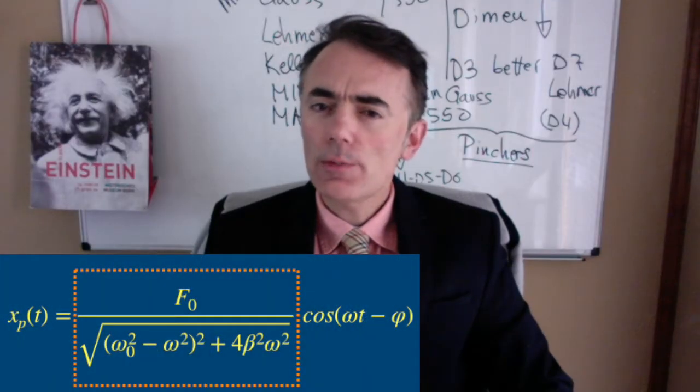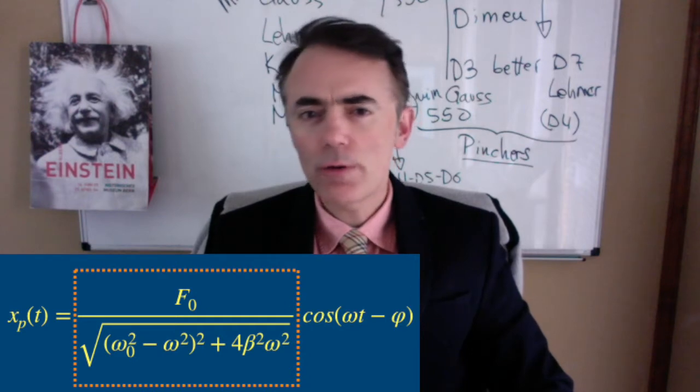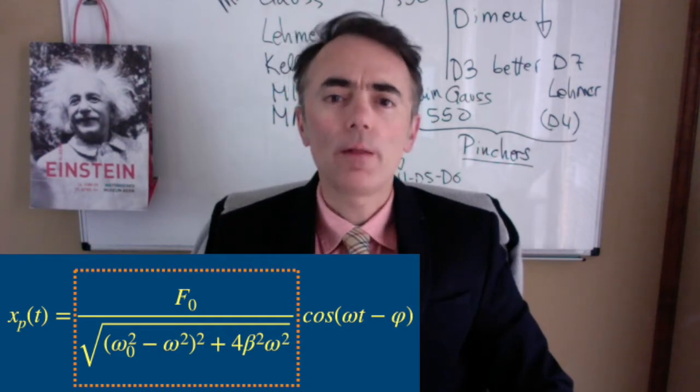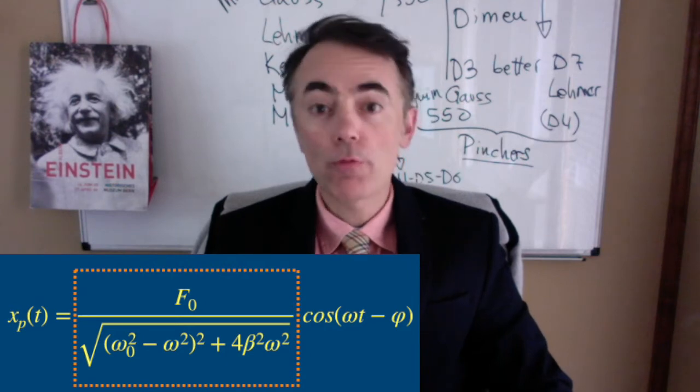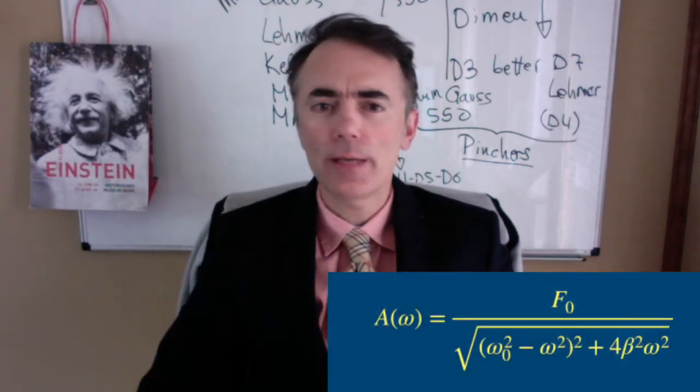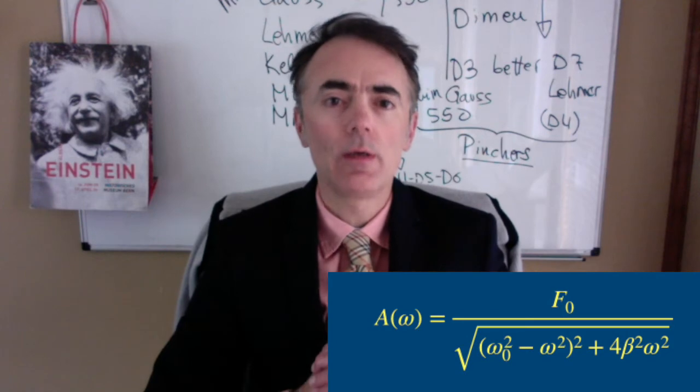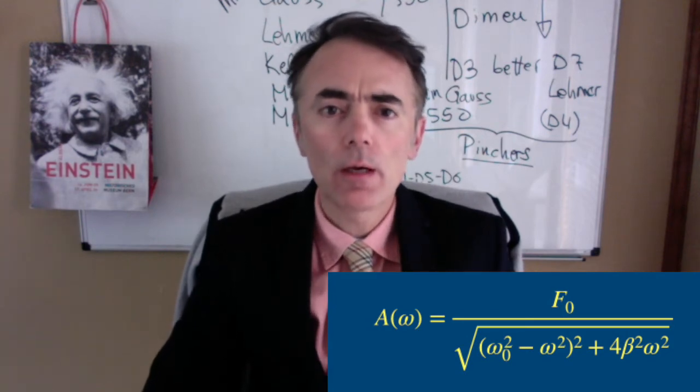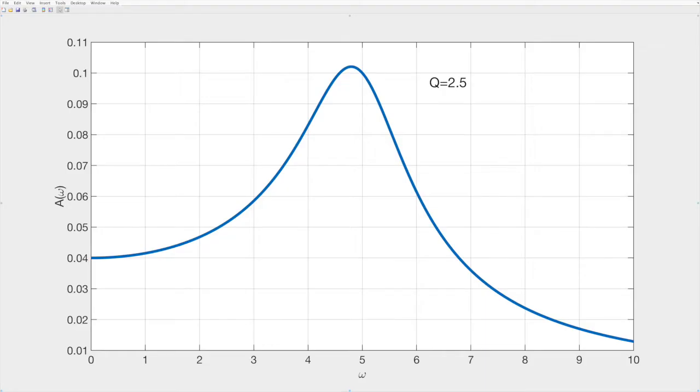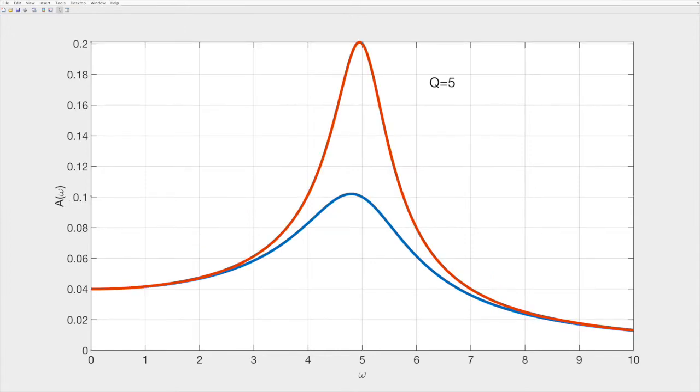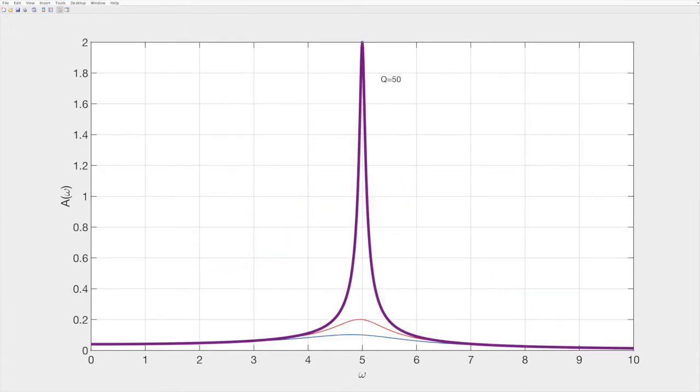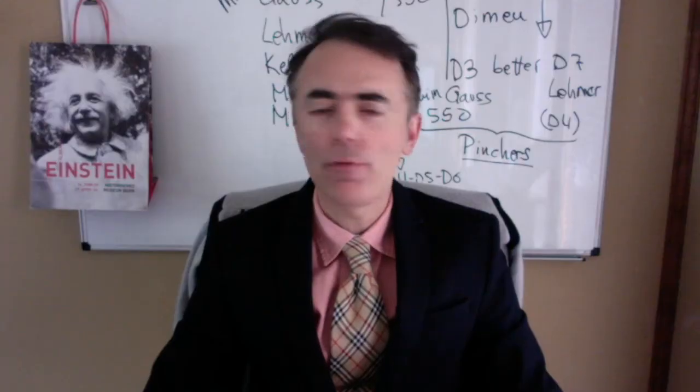We could design an experiment where we change the frequency of the external forcing and then measure the amplitude of the oscillations. If we perform this experiment we can plot the amplitude with respect to the frequency. In this case we find a peak shaped plot. The peak gets narrower as the damping fades away. Remember that the energy of the system is proportional to the square of the amplitude.